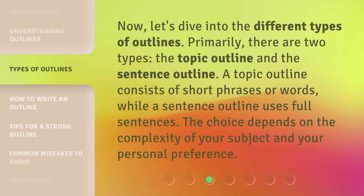Now, let's dive into the different types of outlines. Primarily, there are two types: the topic outline and the sentence outline. A topic outline consists of short phrases or words, while a sentence outline uses full sentences. The choice depends on the complexity of your subject and your personal preference.